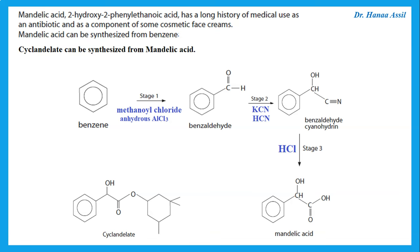To go from mandelic acid to cyclandylate: the final product is an ester, so we need to add an alcohol component to the mandelic acid via esterification. Using concentrated sulfuric acid and heat under reflux gives the final ester, cyclandylate.